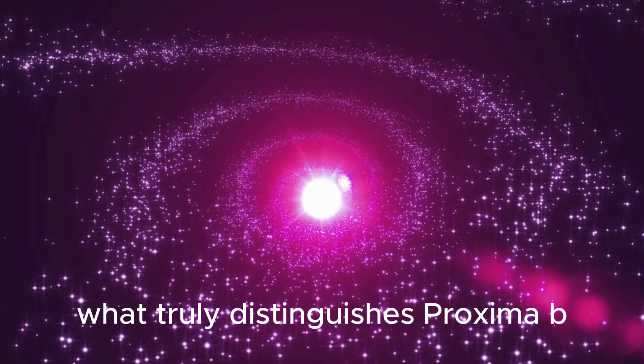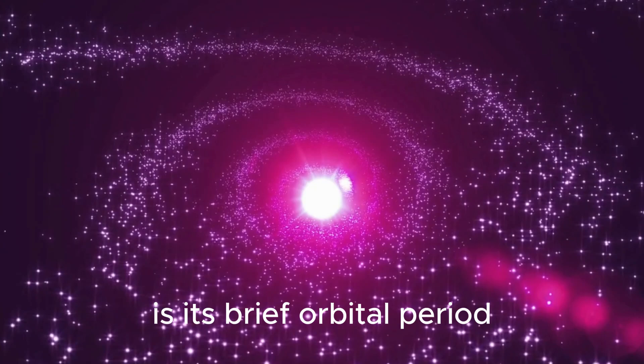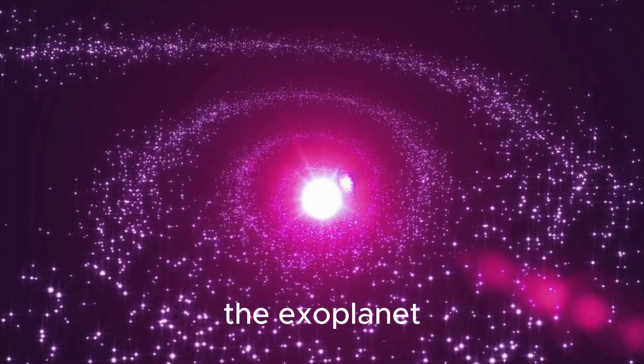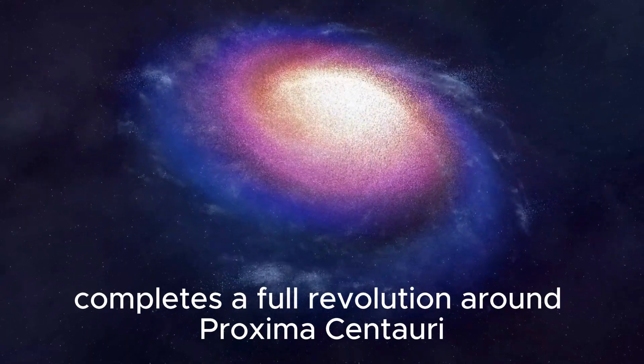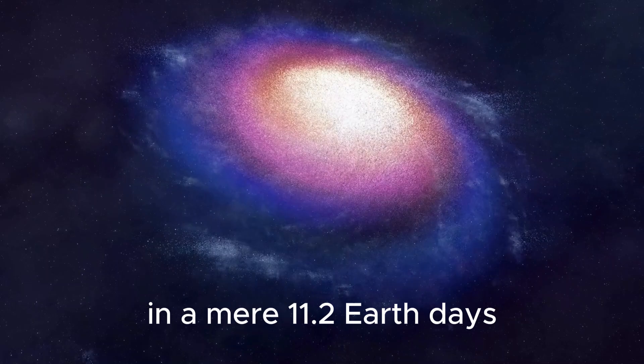What truly distinguishes Proxima b is its brief orbital period. The exoplanet completes a full revolution around Proxima Centauri in a mere 11.2 Earth days.